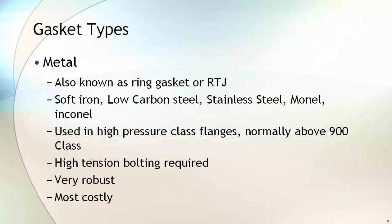Metallic gaskets are manufactured from materials such as soft iron, low carbon steel, stainless steel, Monel, and Inconel. These gaskets are also known as ring gaskets or RTJ gaskets. They are used in high pressure class flanges, normally above 900 class, and can also be used in high temperature services. High tension bolting is required when using metallic gaskets. They are very robust and the most costly among all types of gaskets.